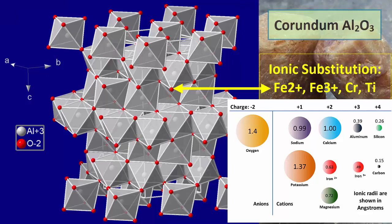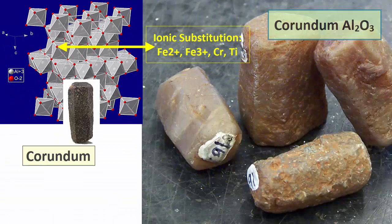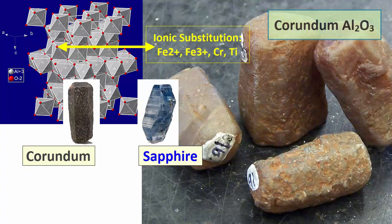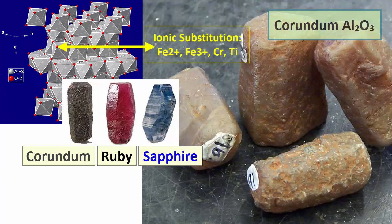Corundum is a good example of ionic substitution changing color. The chemical formula for corundum is Al2O3. With a little titanium and iron substitution for aluminum, corundum will turn blue and is called sapphire. With a little chromium substitution for aluminum, corundum turns red and is called ruby.